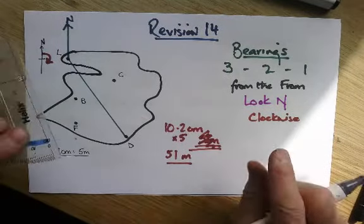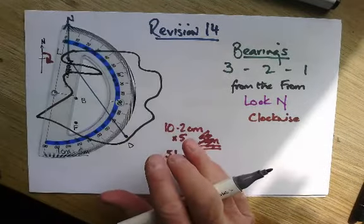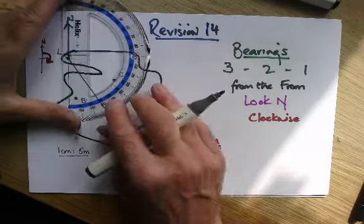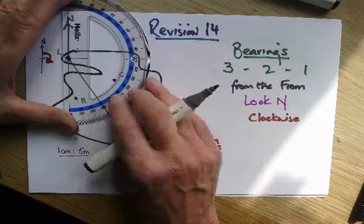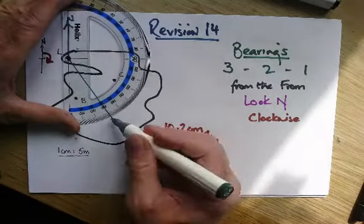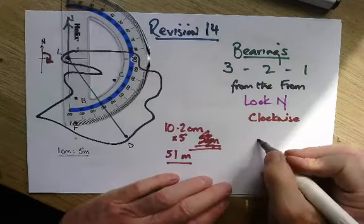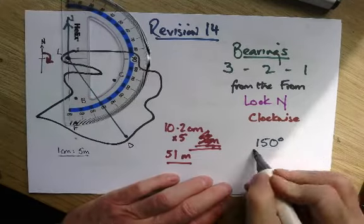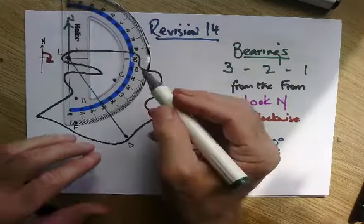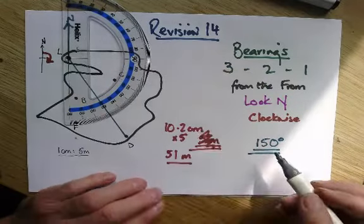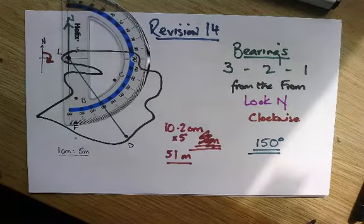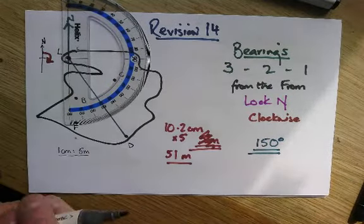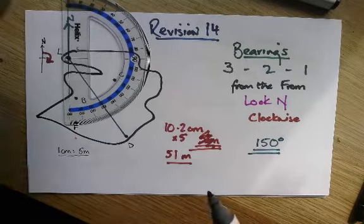The other thing you need to remember is if the angle is less than a hundred, you put a zero in front of the number - it's always three figures. Here you can see it's 150 degrees, that's a bearing of 150. Don't forget if the bearing was over here and it's 80, you'd have to write 080.